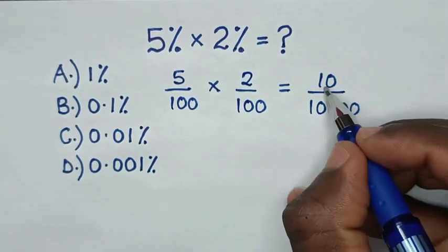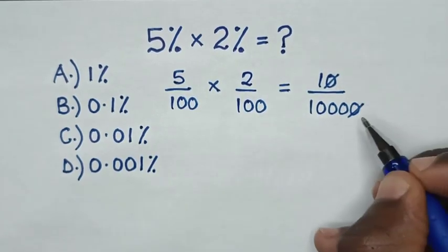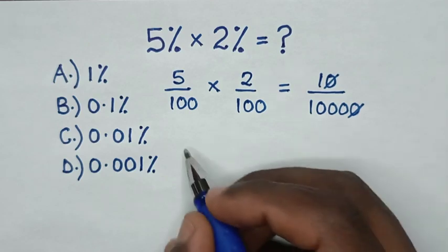Then to simplify, this 10 will cancel with this 10, so it will be 1 over 1,000.